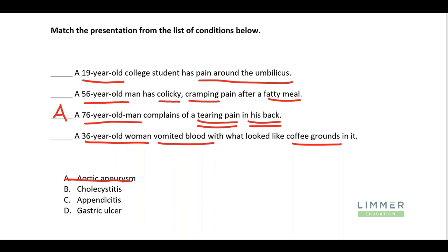Now, cholecystitis, appendicitis, and gastric ulcer remain. The 36-year-old woman vomited blood with coffee grounds. Coffee grounds is ultimately digested blood. We can also see digested blood in a bowel movement — called melena: a dark, tarry, foul-smelling stool, which indicates GI bleeding. So vomiting coffee grounds — that's gastric ulcer. That really stands out.